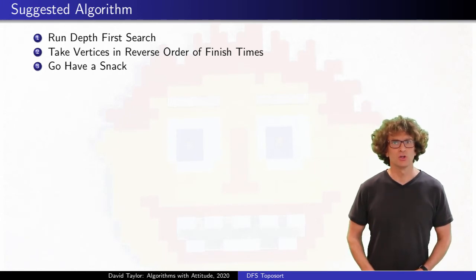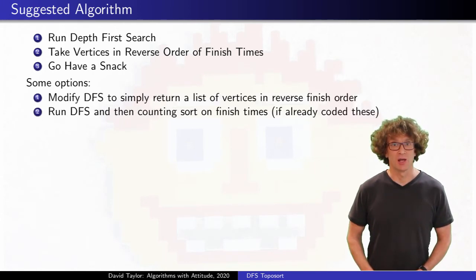To topologically sort, you don't really need the start or finish times. You could modify depth first search to return the topological ordering directly, or if you already have a depth first search routine that calculates finish times for each vertex, you could feed those values through counting sort, to order them in linear time.